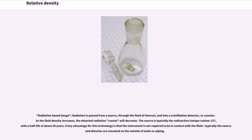Radiation-based gauges pass radiation from a source through the fluid of interest and into a scintillation detector or counter. As the fluid density increases, the detected radiation counts will decrease. The source is typically the radioactive isotope cesium-137, with a half-life of about 30 years. A key advantage of this technology is that the instrument is not required to be in contact with the fluid; typically the source and detector are mounted on the outside of tanks or piping.